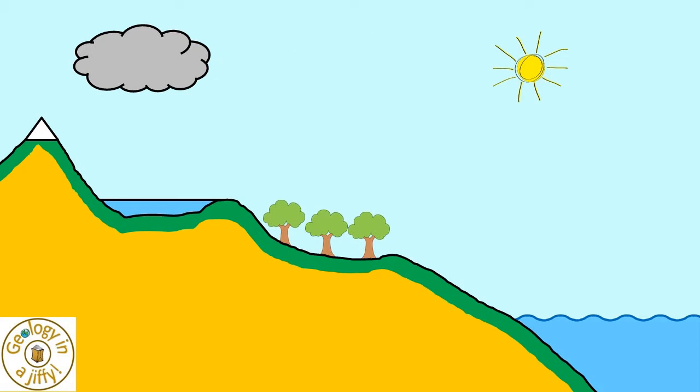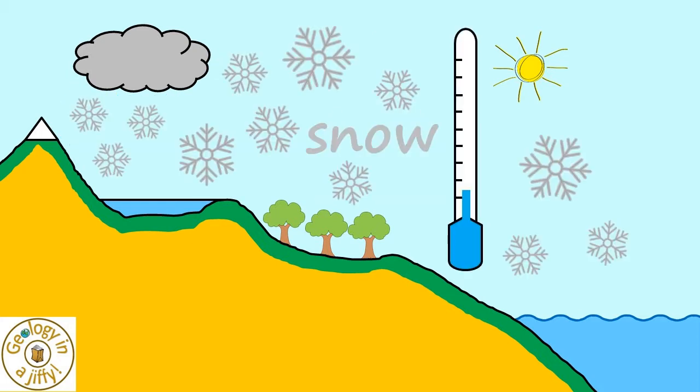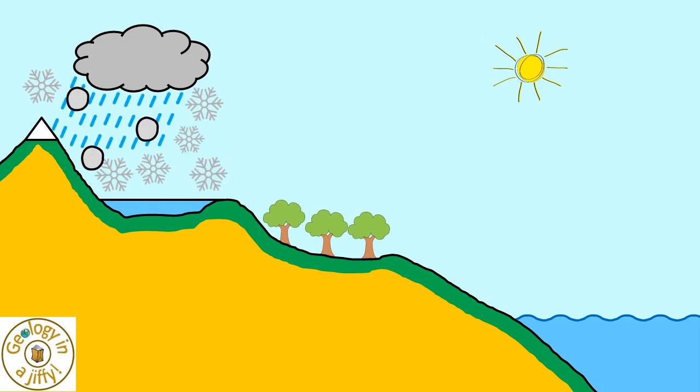This might eventually cause it to rain, or if cold enough, maybe hail or snow, these collectively known as precipitation.